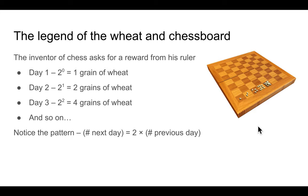So there's a legend or famous story about wheat and a chessboard. So the inventor of chess asked for a reward from his ruler who really enjoyed playing chess. And this was the reward that he proposed. On the first day, give me one grain of wheat on the first square of the chessboard. On the second day, you double that and give me two grains of wheat. On the second square, on the third day, you give me four grains of wheat on the third square, and so on. So there's a pattern, a very simple pattern, where you double the amounts on the previous day for the next day.